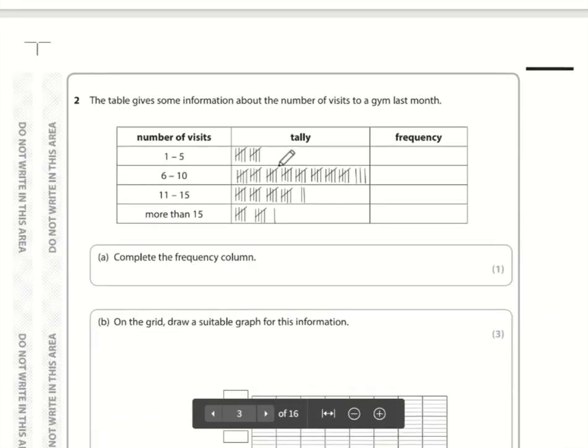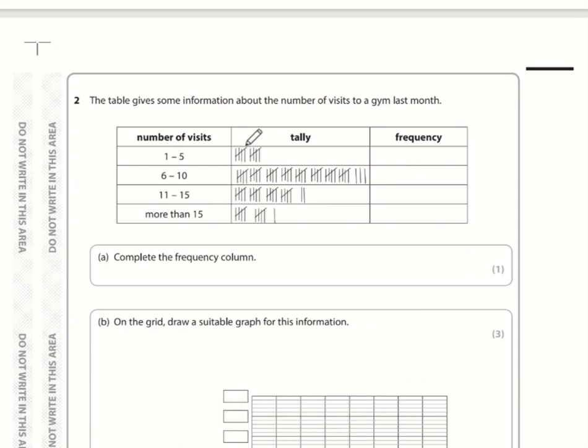Question number two. So complete the frequency column. These tally marks here are in batches of 5. So 5, 10, 15, 20, 25, 30, 35, 40, 43. Next row: 5, 10, 15, 20, 22. And the last row: 5, 10 plus 1 is 11.